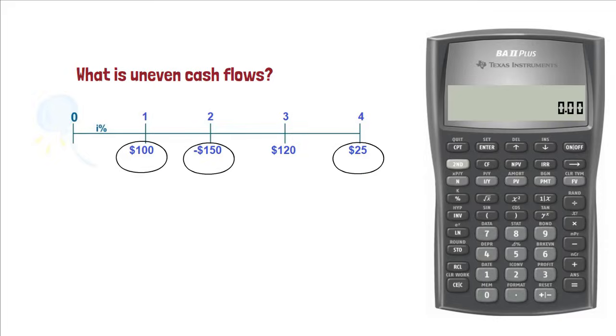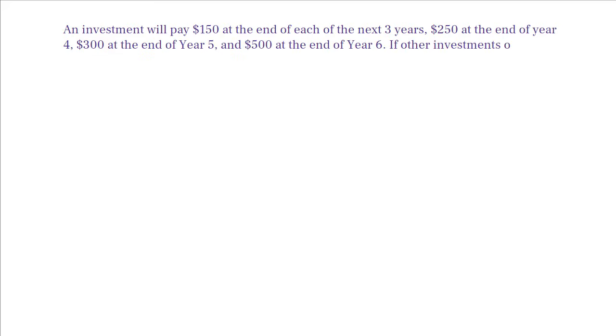Let's take an example. An investment will pay $150 at the end of each of the next three years, $250 at the end of year 4, $300 at the end of year 5, and $500 at the end of year 6. If other investments of equal risk earn 11% annually, what is its present value and its future value?